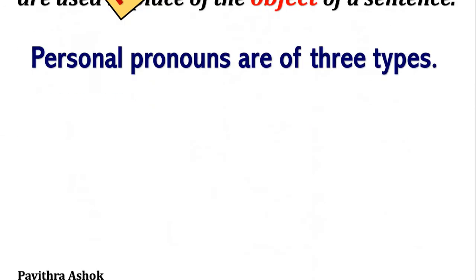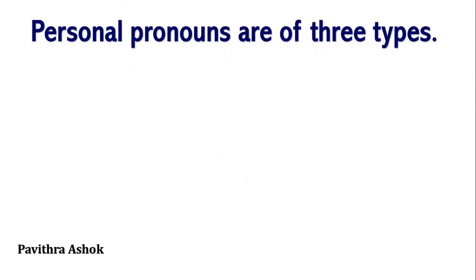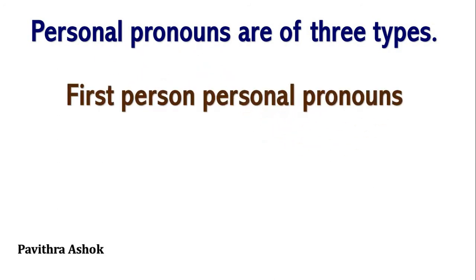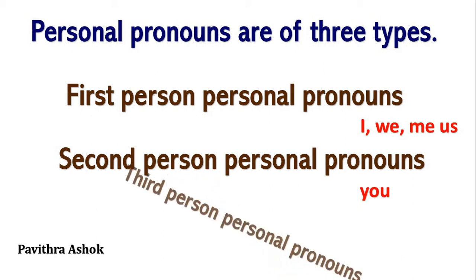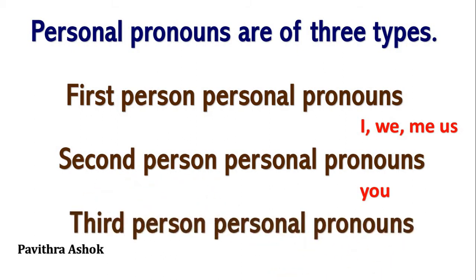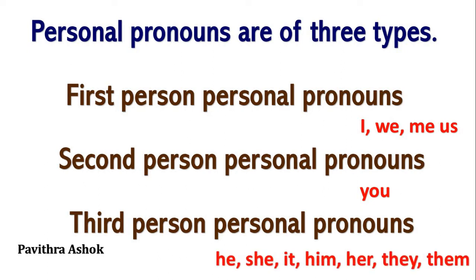Personal pronouns are of three types. First person personal pronouns: I, we, me, us. Second person personal pronouns: you, in singular as well as in plural. Third person personal pronouns: he, she, it, him, her, they, them.